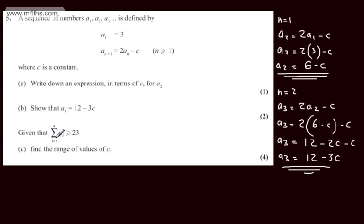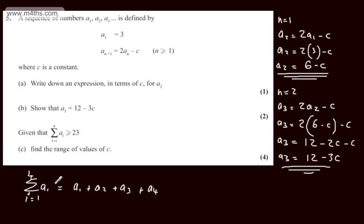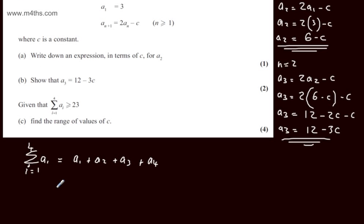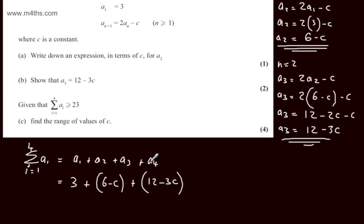In part C, given that the sum from i = 1 to 4 of a_i is greater than or equal to 23, we need to find the range of values of c. The question carries four marks. The sum equals a_1 + a_2 + a_3 + a_4. We have a_1 = 3, a_2 = 6 - c, a_3 = 12 - 3c, and we now need an expression for a_4.